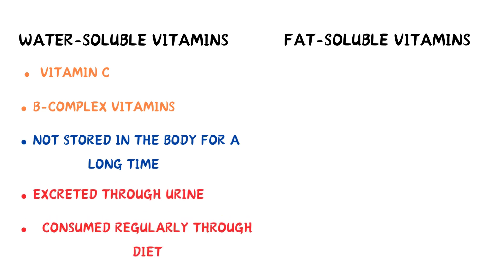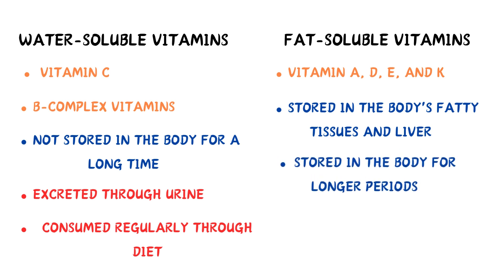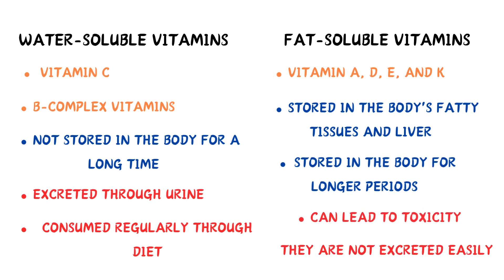Fat-soluble vitamins include vitamins A, D, E, and K. As the name indicates, these vitamins are stored in the body's fatty tissues and liver. Unlike water-soluble vitamins, they can be stored in the body for longer periods, and excessive intake can lead to toxicity since they are not excreted easily.